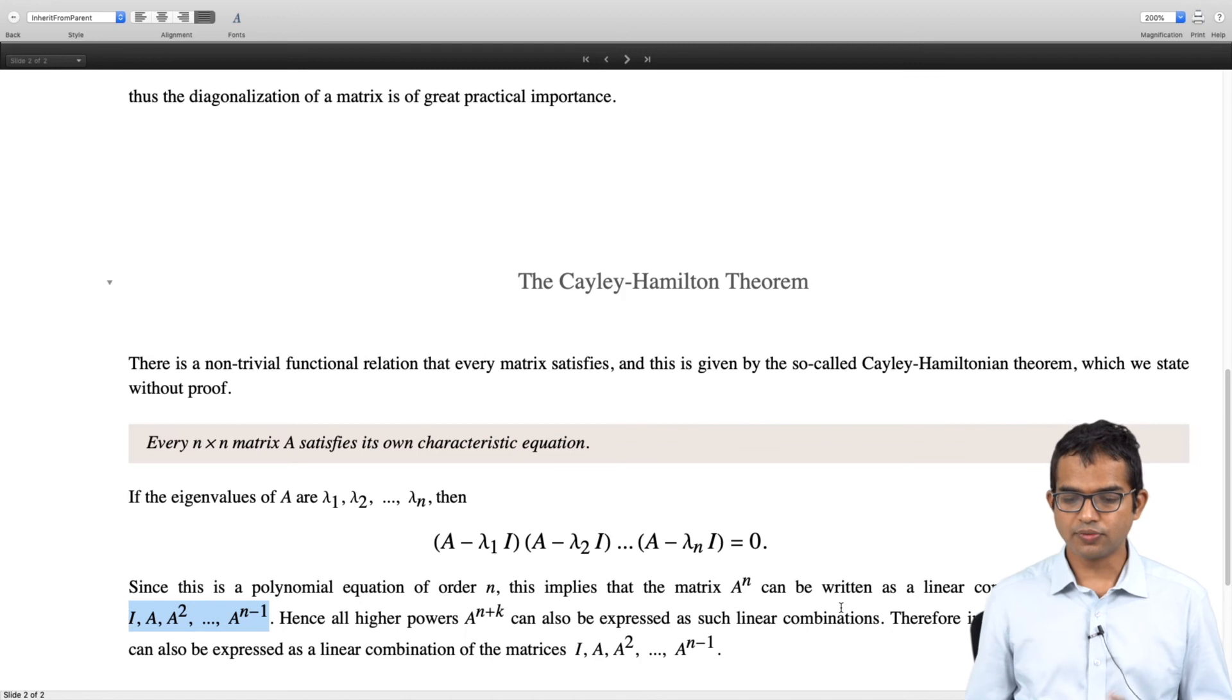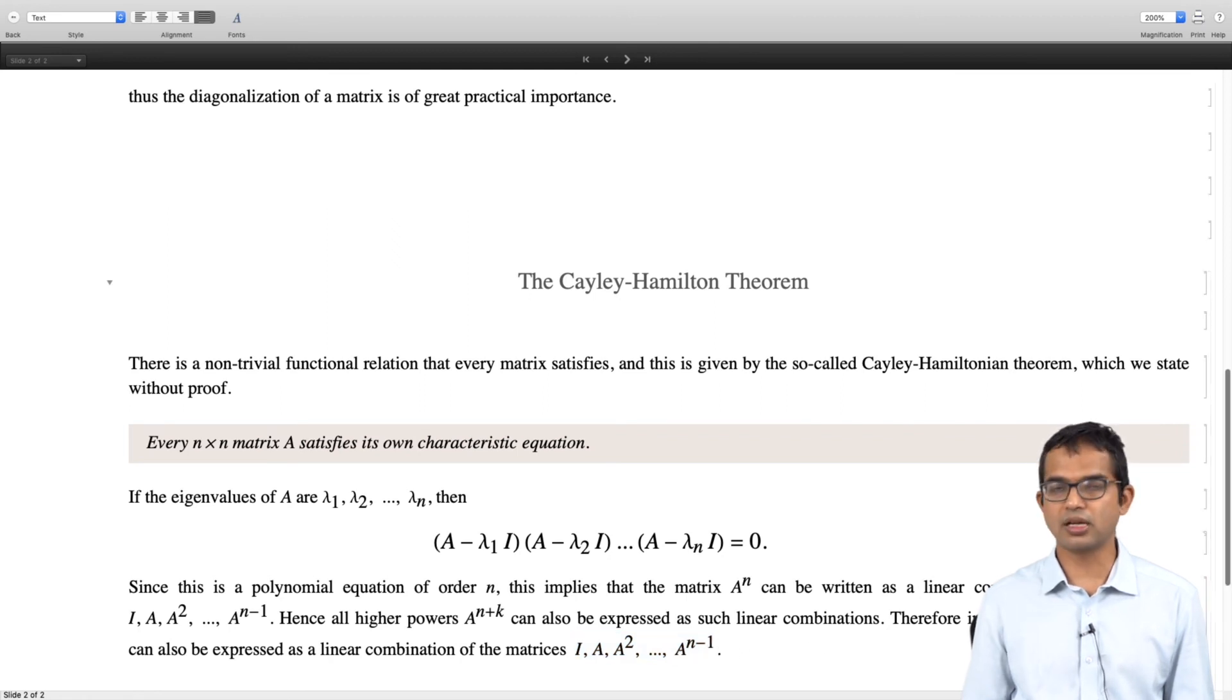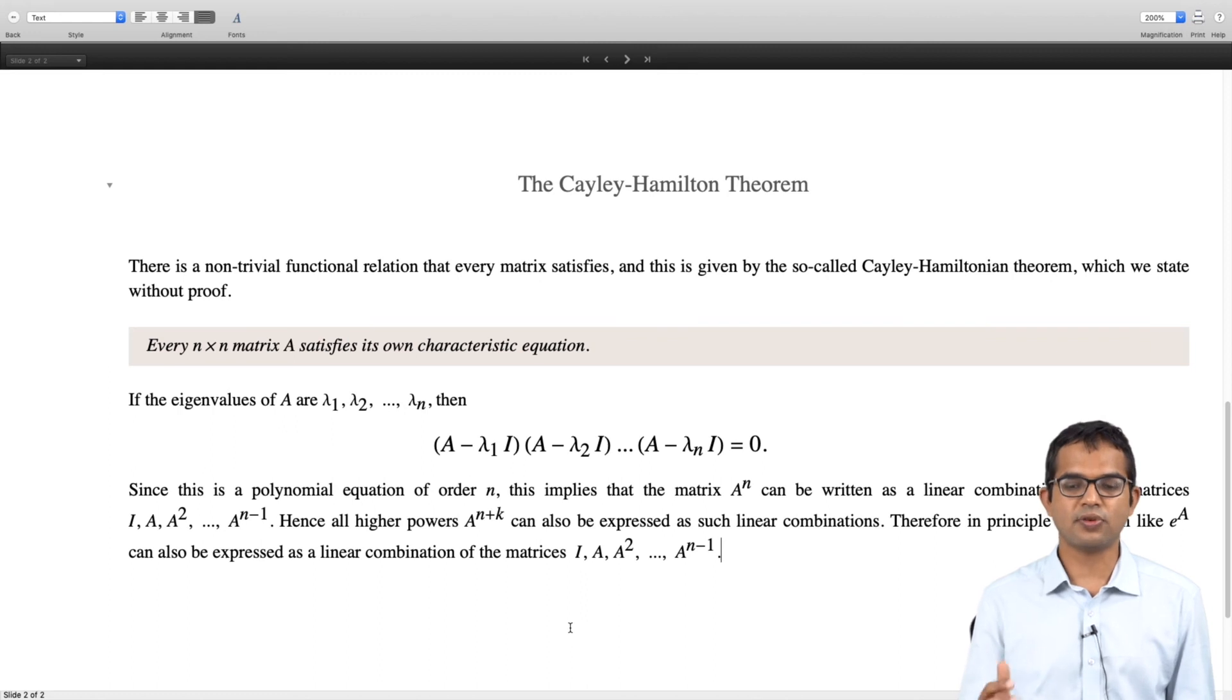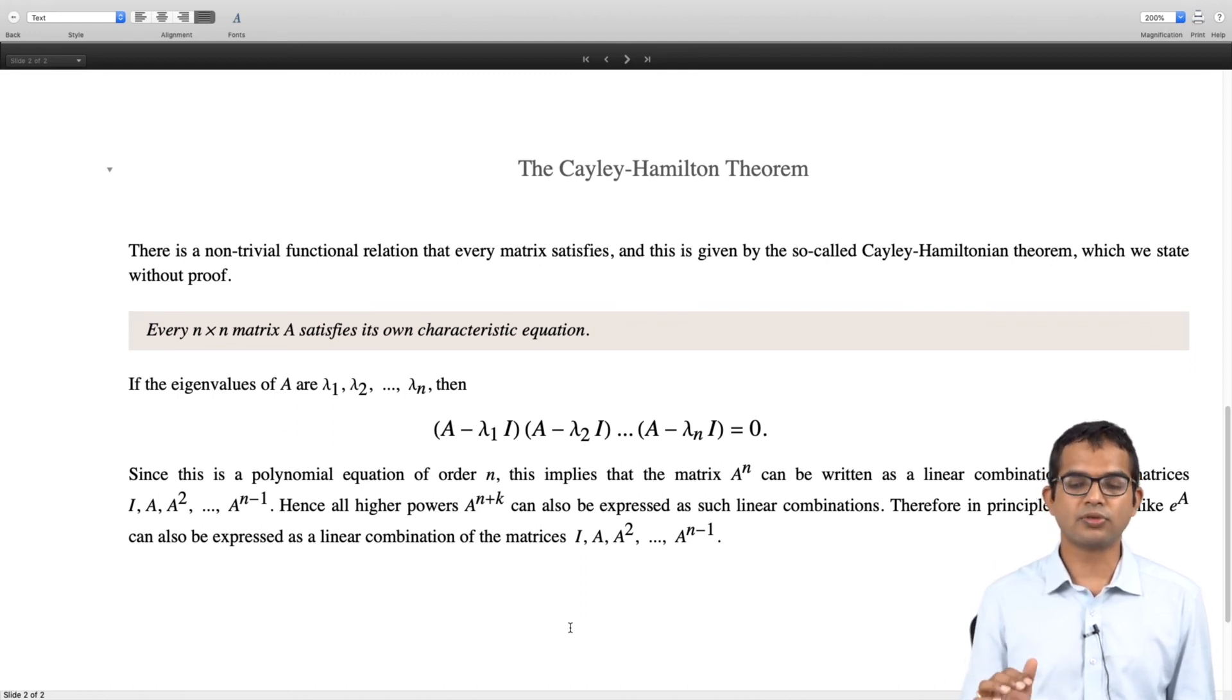So in fact therefore you can write any function of your matrix f of A itself as linear combinations of just these n minus 1 matrices: I, A, A squared all the way up to A to the n minus 1. So in fact in principle a function like e to the A can also be expressed as a linear combination of these matrices. I have just stated this as a fact and it is a useful fact sometimes, but from the point of view of completeness we include just a short description of the Cayley-Hamilton theorem.